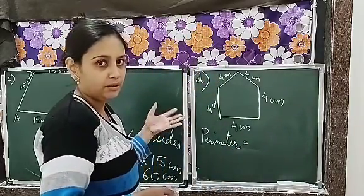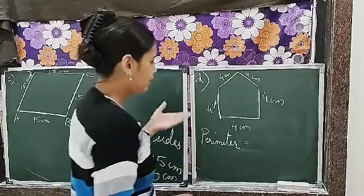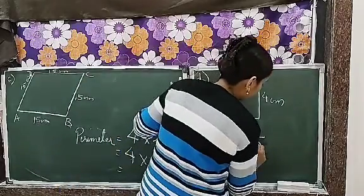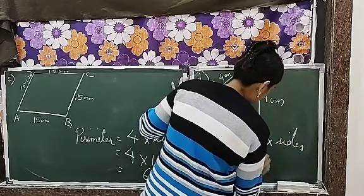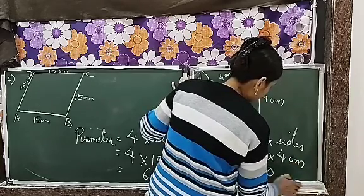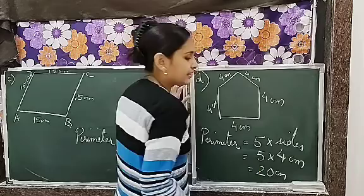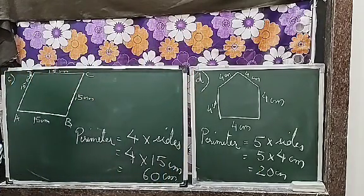So how many sides are there? 1, 2, 3, 4, 5. Since it is a pentagon, so 5 into sides which is equal to 5 into 4 centimeter and 5 fours are gives us 20. So the answer is 20 centimeters. This completes the C part.